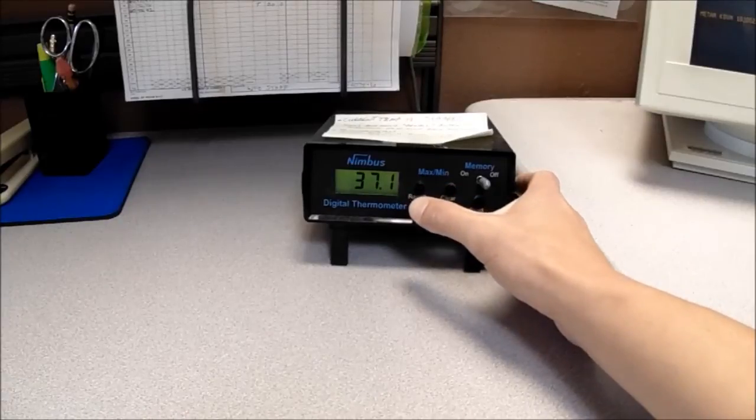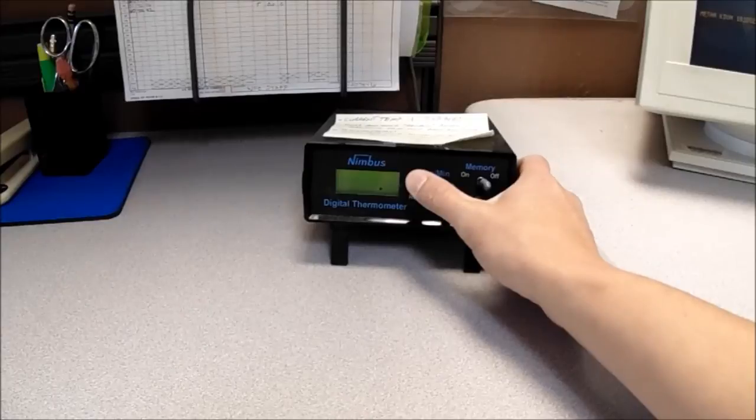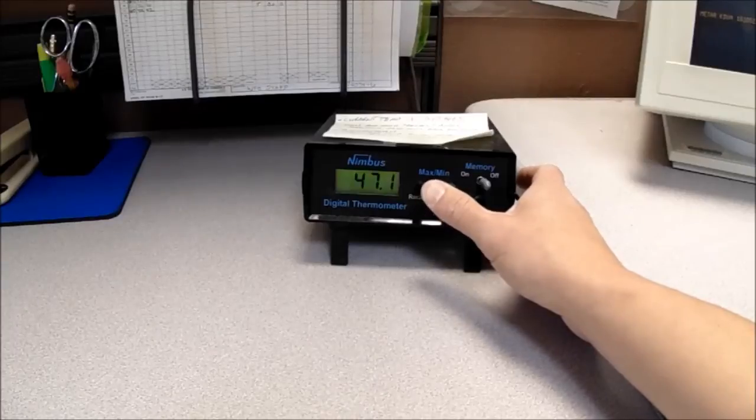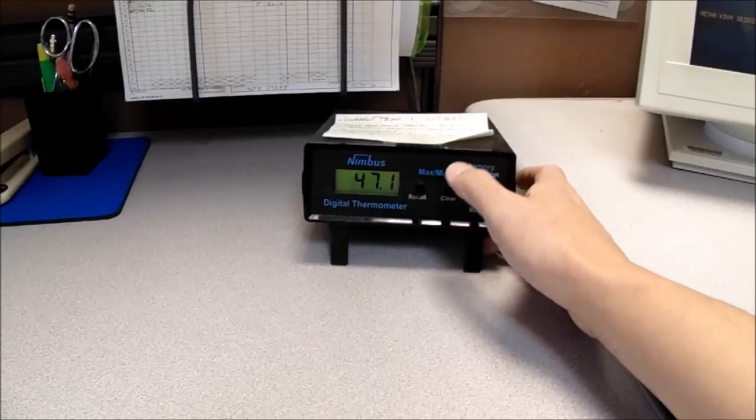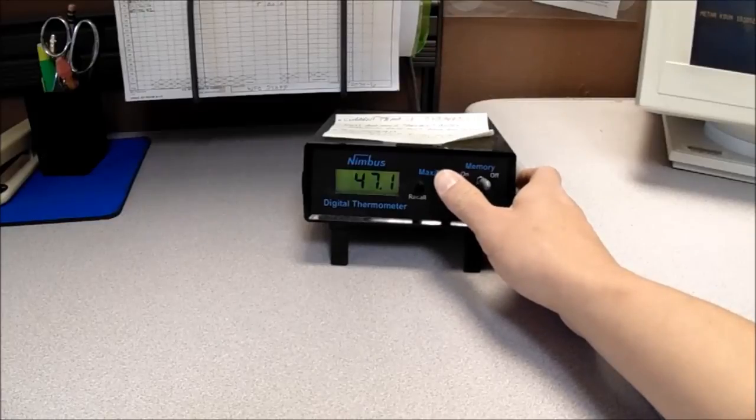So at this time, you've got your current temperature of 47, the high temperature of 48, and low of 37. Go ahead and record those, and after you've completed your observation, the next button you need to hit and hold is the clear button, which is right here.